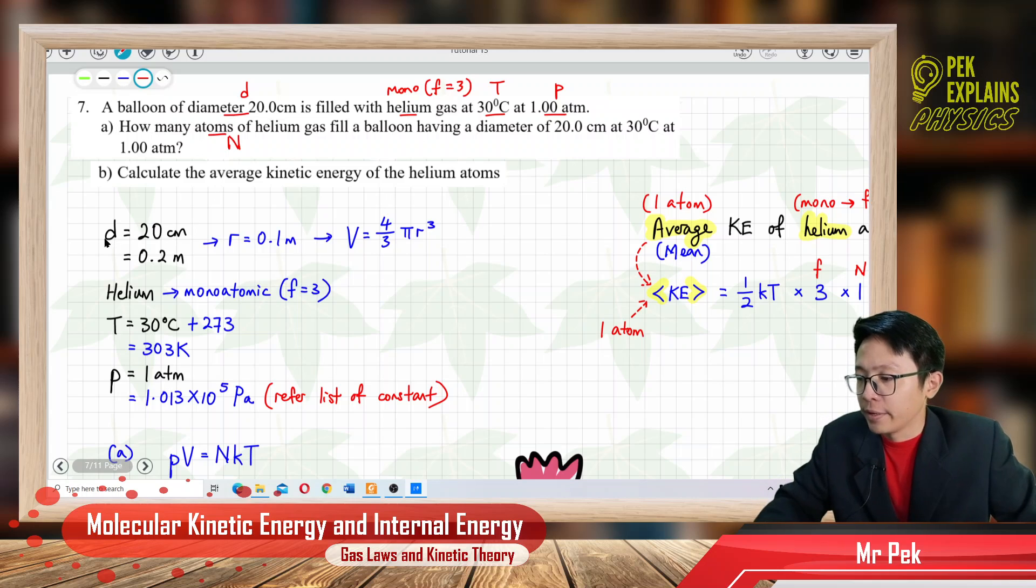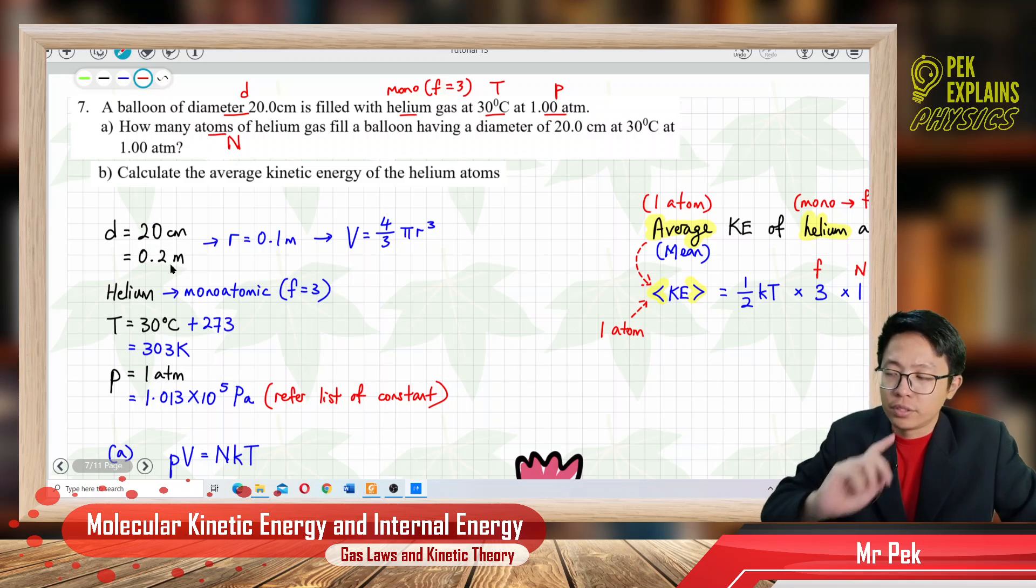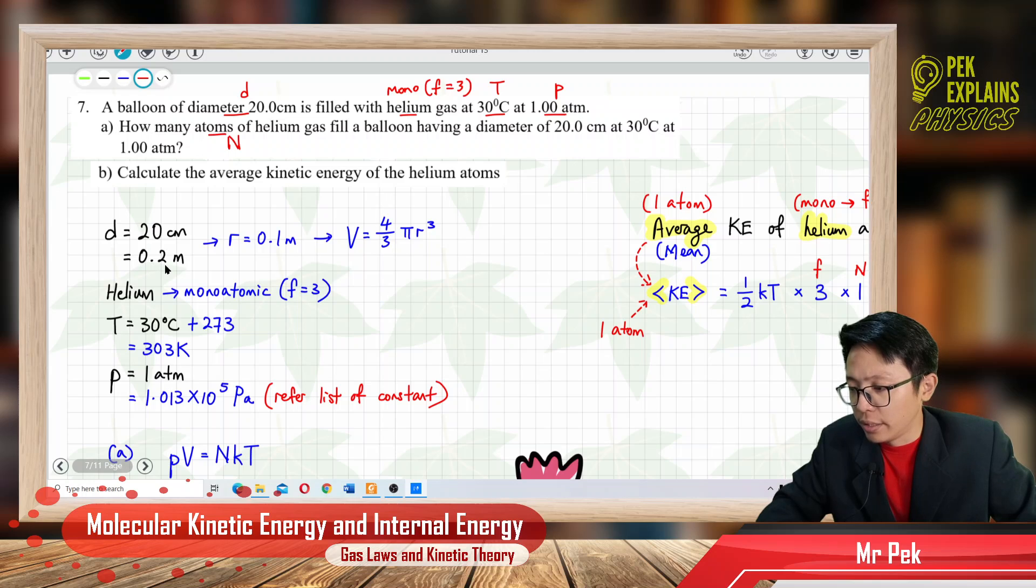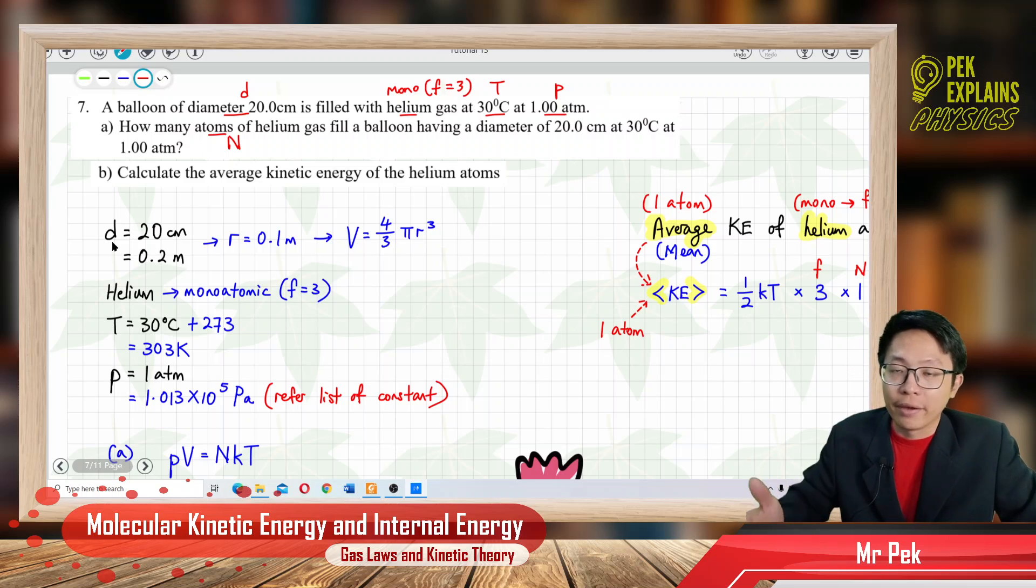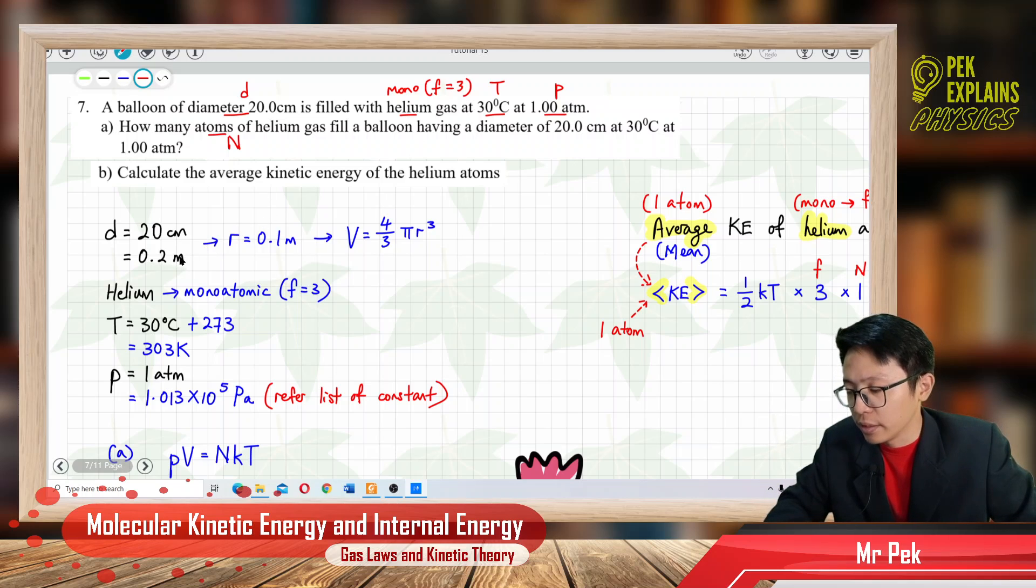First, diameter is given in cm, need to change to meter, so divide by 100. Always change to SI unit. And then, if this chapter concerns about volume, instead of area, it concerns about pressure, volume, and temperature. This is a balloon, which is a sphere, so diameter can help us to find the volume of the sphere.